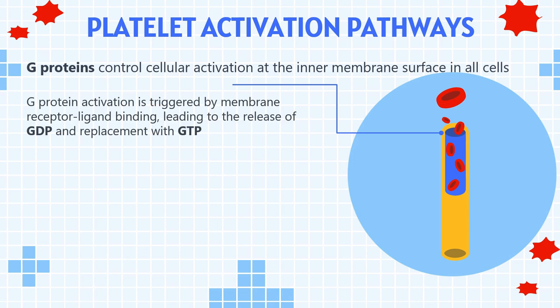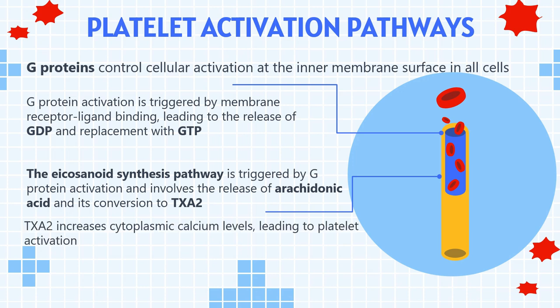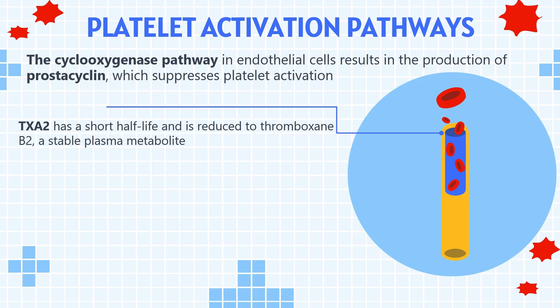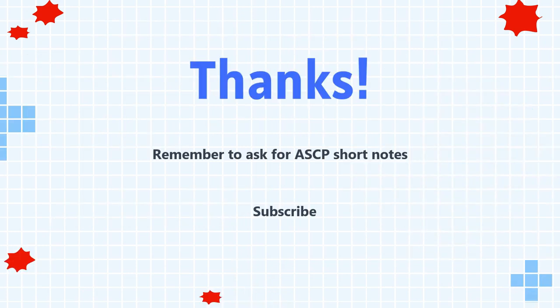G-protein activation is triggered by membrane receptor ligand binding, leading to the release of guanosine diphosphate and replacement with deoxyguanosine triphosphate. The eicosanoid synthesis pathway is triggered by G-protein activation and involves the release of arachidonic acid and its conversion to TXA2. TXA2 increases cytoplasmic calcium levels, leading to platelet activation. The cyclooxygenase pathway in endothelial cells results in the production of prostacyclin, which suppresses platelet activation. TXA2 has a short half-life and is reduced to thromboxane B2, a stable plasma metabolite, which is then acted on by liver enzymes to produce soluble urine metabolites. Thank you for completing the video; remember to ask for ASCP short notes, and don't forget to subscribe.